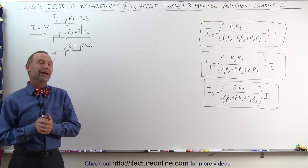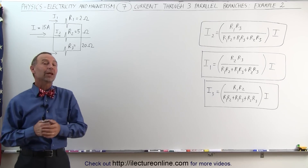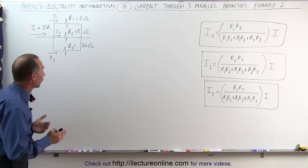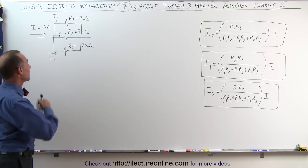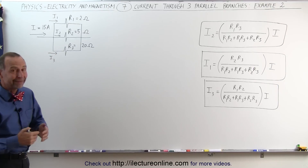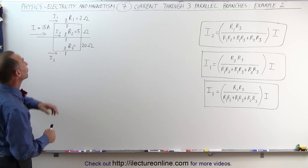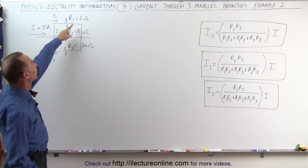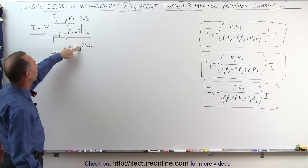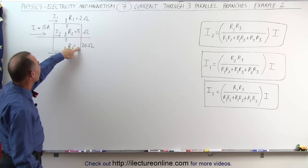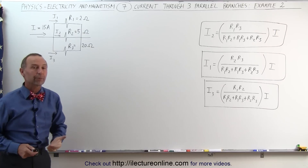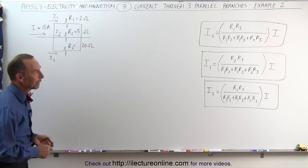Welcome to our lecture online. Let's do another example of how to find the current through a three parallel branch circuit. Here are different kind of values. We have a 2 ohm resistor, a 5 ohm resistor, a 20 ohm resistor in the bottom branch, and 15 amps of current entering the branch point.